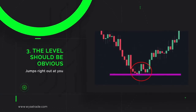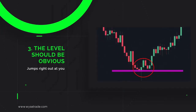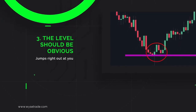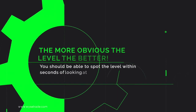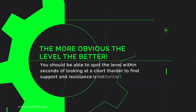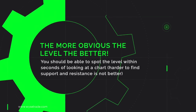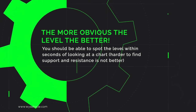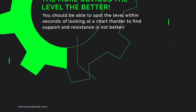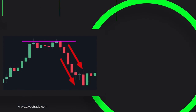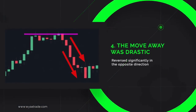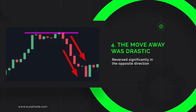Three: we want the level to be obvious, meaning it jumps right out at you and you should be able to spot the level right away when looking at a chart. Four: the move away from the area was drastic.